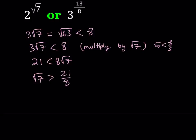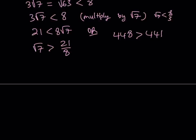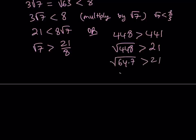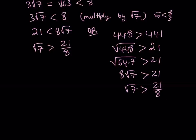There's also an alternative approach. We can directly start with 448 is greater than 441, then square root both sides. The square root of 441 is 21, and 448 can be written as 64 times 7, giving us 8 root 7 is greater than 21. So root 7 is greater than 21 eighths — the same result by a different method. The key idea is comparing root 7 to a smaller rational number.